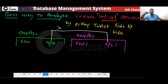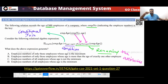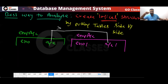The age value should be greater than the age1 value. Finally, what we are projecting is the employee number — we are projecting this employee number from the join result.